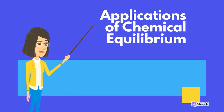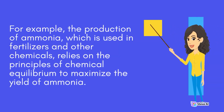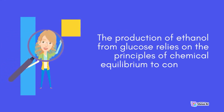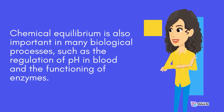Applications of Chemical Equilibrium. Chemical equilibrium has many important applications. For example, the production of ammonia, which is used in fertilizers and other chemicals, relies on the principles of chemical equilibrium to maximize the yield of ammonia. The production of ethanol from glucose relies on the principles of chemical equilibrium to control the extent of the reaction. Chemical equilibrium is also important in many biological processes, such as the regulation of pH in blood and the functioning of enzymes.